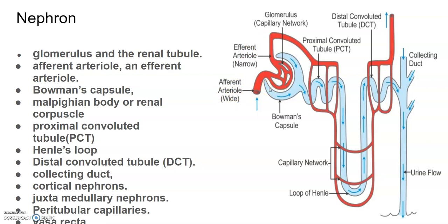The renal tubule begins with a double-walled cup-like structure called Bowman's capsule. This is the glomerulus part and the tubular part begins from Bowman's capsule. The glomerulus enclosed within Bowman's capsule is called the Malpighian body or the renal corpuscle.